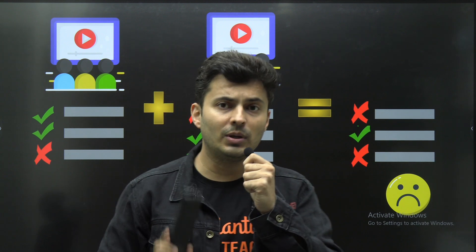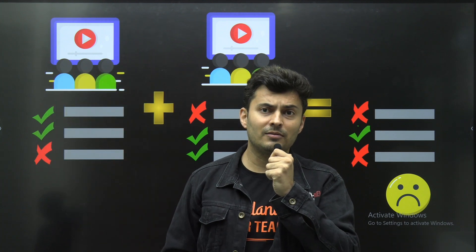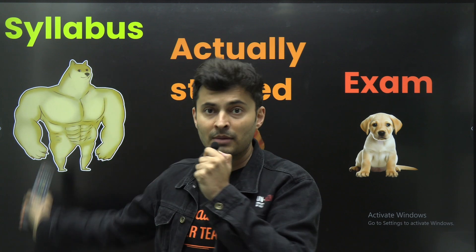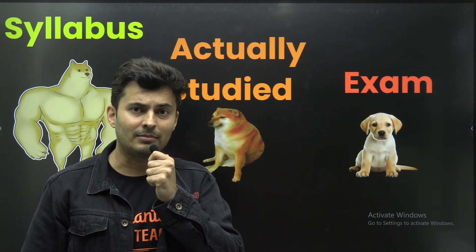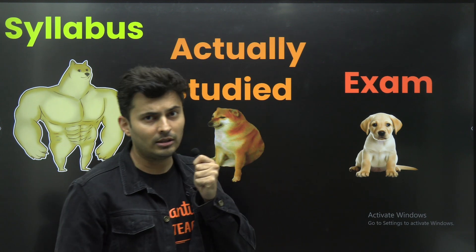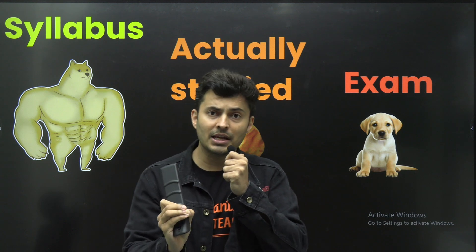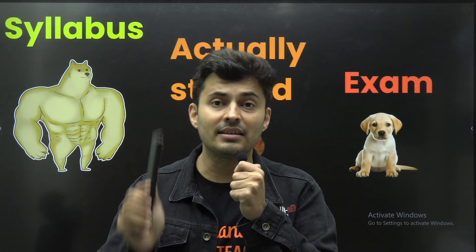Haven't you done this? Haven't you felt that so many chapters are not important and you only need to do a few selective ones? What happens eventually is the actual syllabus is this big, but because of these videos you end up studying maybe a small chunk of the entire syllabus — and that too half-heartedly. In the exam, it's a big joke: you only end up utilizing just 20 to 30 percent of the syllabus knowledge, and that's the reason why scores go down.